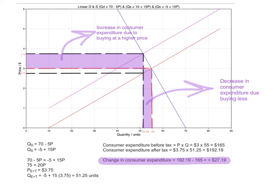Looking at the shaded areas, the purple area represents the total change in consumer expenditure. There is a decrease in consumer expenditure due to buying less, shown by one small rectangle, but there is also an increase due to buying at a higher price, shown by a larger rectangle. Since this larger rectangle outweighs the smaller one, the net effect is that consumer expenditure increases.